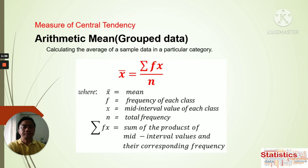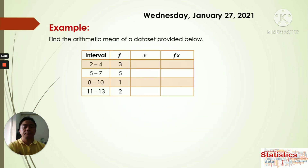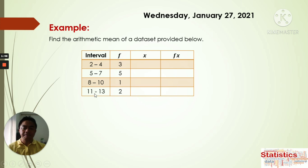We have the application — the examples. Find the arithmetic mean of the data set provided below. The data ranges from a minimum of 2 to a maximum of 13, and these are the frequencies for each class. For 2 to 4, there are 3. For 5 to 7, there are 5. For 8 to 10, there is 1. And for 11 to 13, there are 2. This is the usual way of making a frequency table.